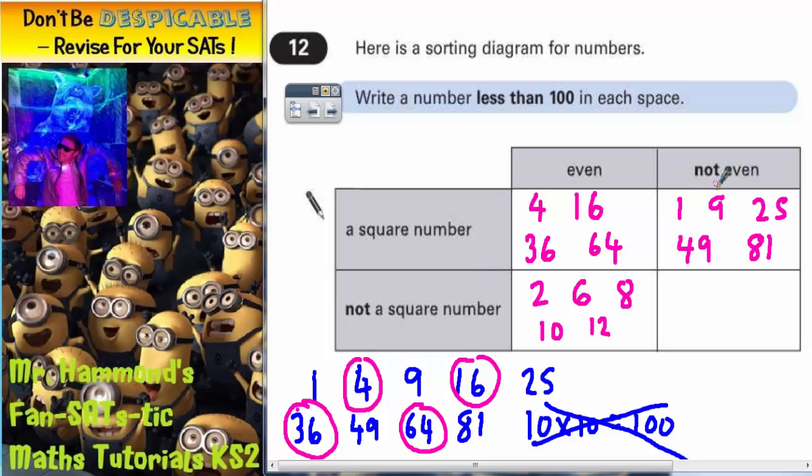Now we want not even and not square. So we want odd numbers that are not in this list. So we could have 3. That's odd and it's not a square number. We could have 5 is odd and it's not square. We could have 7.